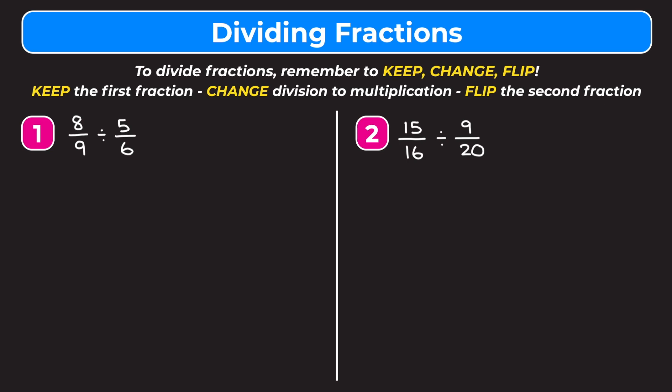Number one says eight ninths divided by five sixths. So we're going to keep eight ninths as it is, change the division to multiplication, and flip the second fraction upside down so it becomes six fifths. Now we're just going to multiply across like we normally do, and we can cross-reduce if possible.